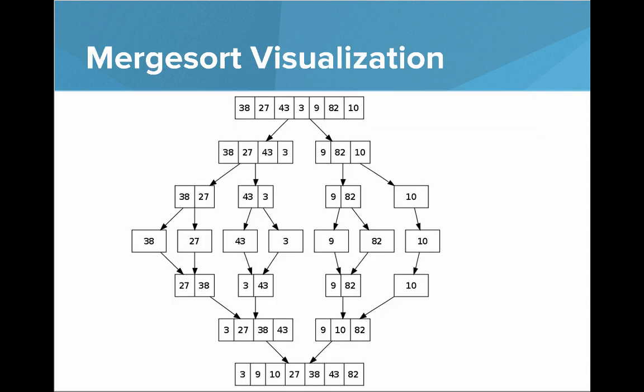Let's take another look at a Merge Sort visualization. You have the large array, then you break it into smaller sub-arrays until you have arrays of length 1 that are sorted. Then you merge the adjacent arrays — those smaller sorted sub-arrays — and continue to merge them back together until you have the full sorted list.